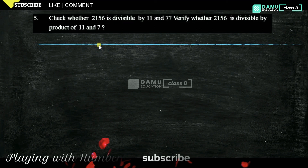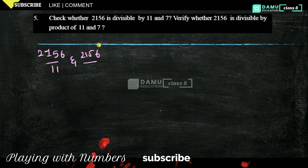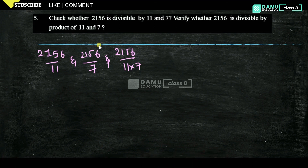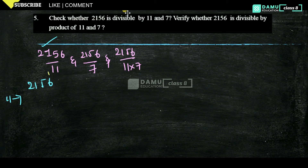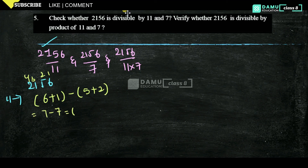In this module, we are going to check whether 2156 is divisible by 11, whether 2156 is divisible by 7, and verify whether 2156 is divisible by the product of 11 and 7, which is 77. First, check 2156 with divisibility by 11. The divisibility rule for 11: sum of odd places minus sum of even places. Odd places: 6 plus 1; even places: 5 plus 2. That gives 7 minus 7 equals 0, so 2156 is divisible by 11.